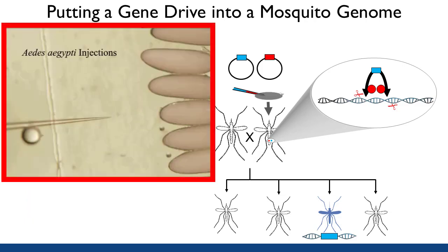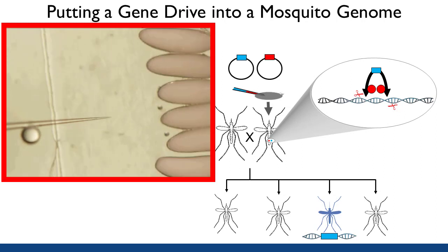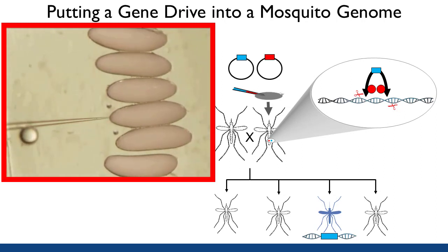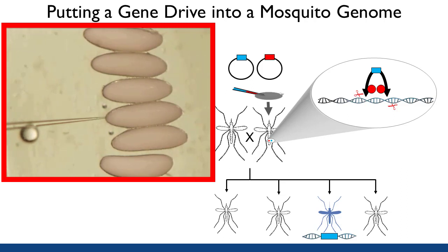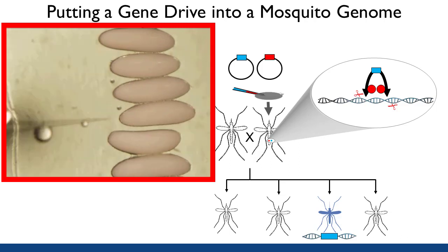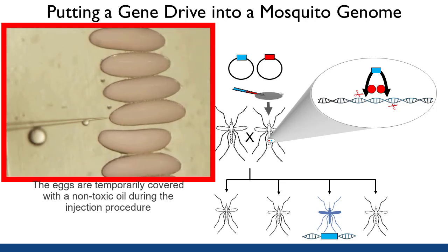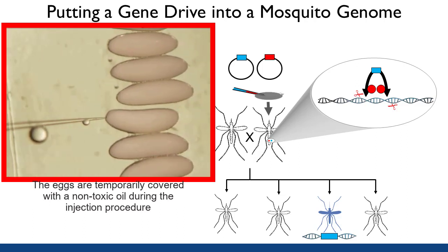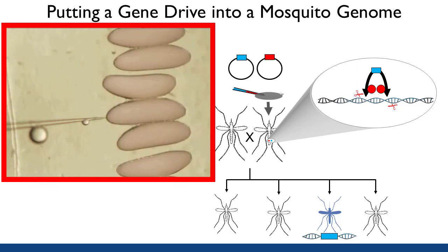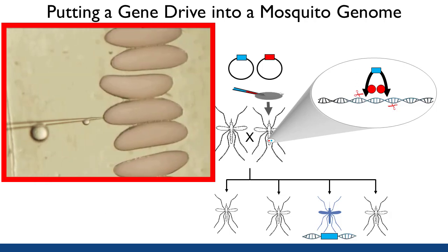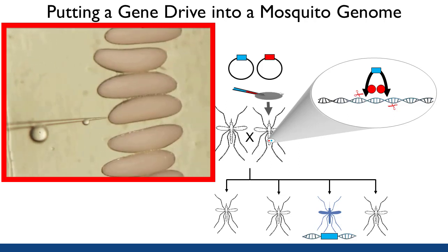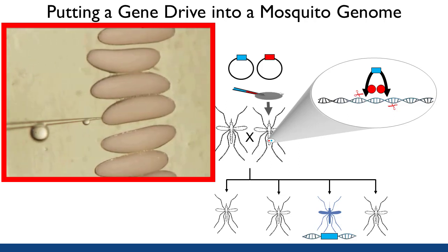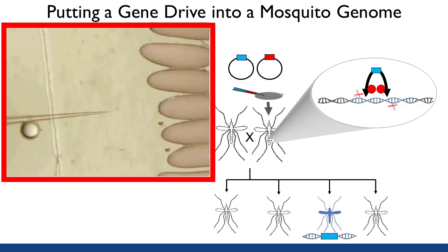This video shows the microinjection of mosquito embryos. In this case, the embryos are of the yellow fever mosquito Aedes aegypti. These eggs have just been deposited by a female and are almost white and are fairly soft. They have been collected and carefully aligned in a row for convenience. In an hour or so, these eggs will be dark black, very rigid and hard, and impossible to inject. These eggs are about the size of a lowercase i on a typical printed page.